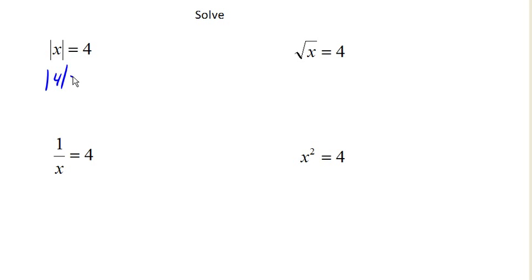The absolute value of 4 is 4, and the absolute value of negative 4 is also 4. And so it turns out that there are two solutions to this equation: negative 4 and 4, because both of them have an absolute value of 4.